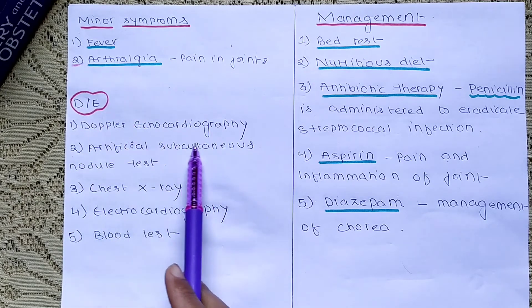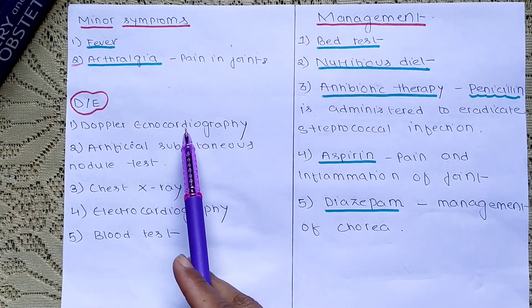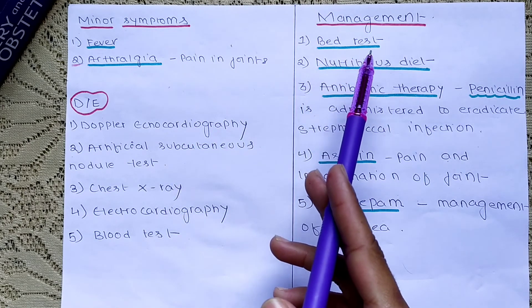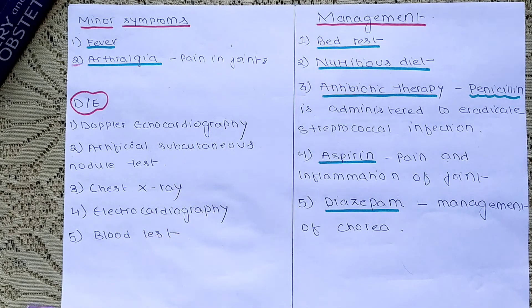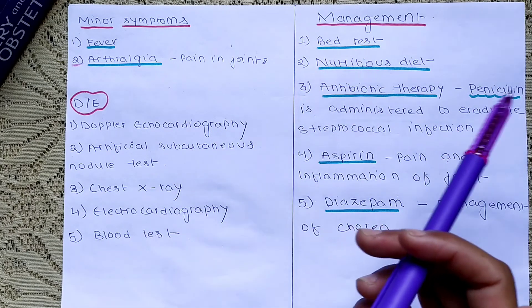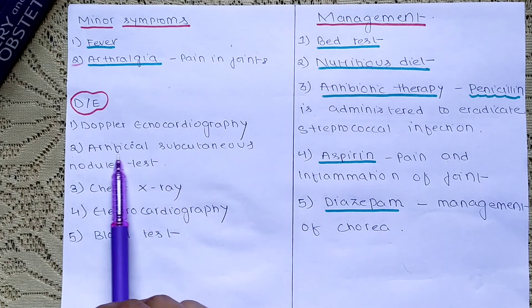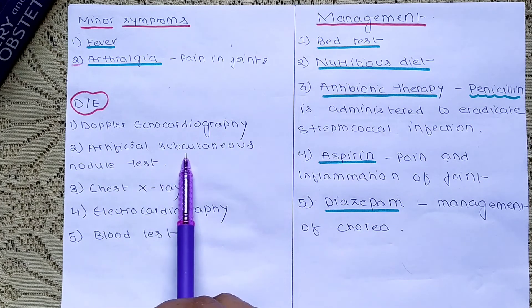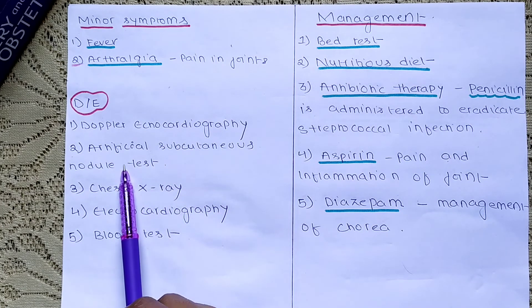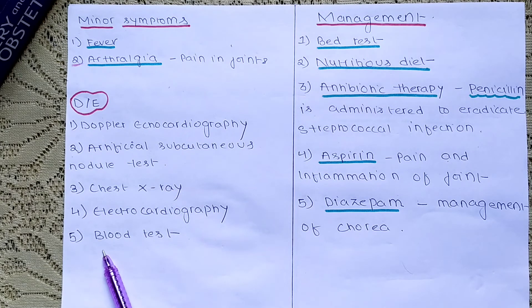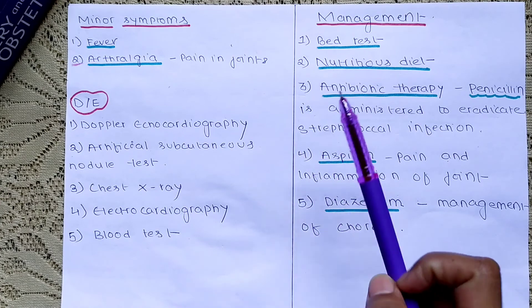Diagnostic evaluation includes Doppler echocardiography, which is used to measure and assess the flow of blood through the heart chambers and valves. Other tests include subcutaneous nodule assessment, chest X-ray, electrocardiography, and blood tests.